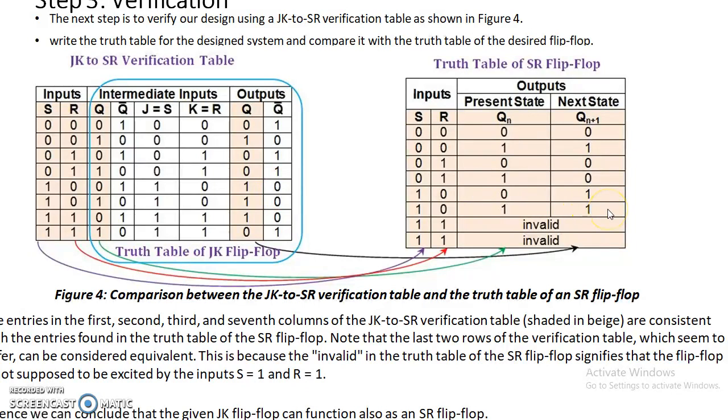We can see that the entries in the first, second, third, and seventh column of JK to SR verification table, which is shown in shaded colors, are consistent with the entries found in the truth table of an SR flip-flop. This verifies that our JK flip-flop has now been converted to SR flip-flop. Hence we can conclude that this conversion works. Thank you.